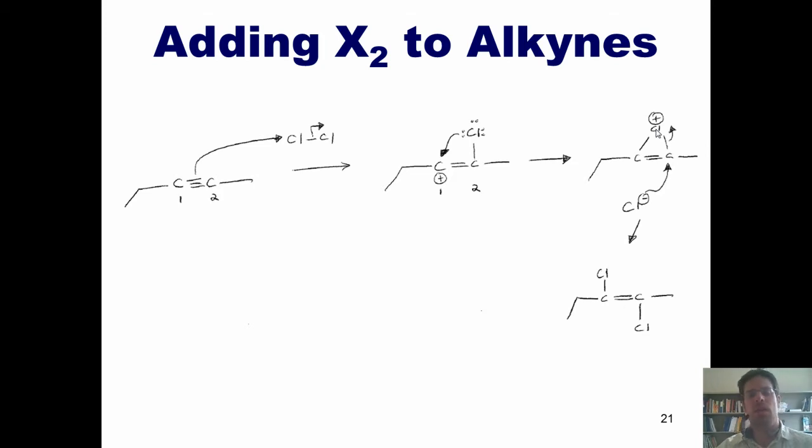Now, this is the product that you would get and you would stop at if you added this alkyne and Cl2 in a one-to-one ratio. If, however, you add an excess amount of Cl2, this reaction will move on.